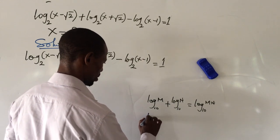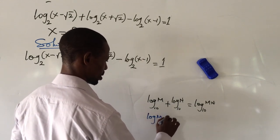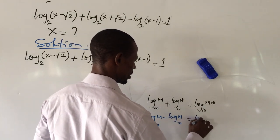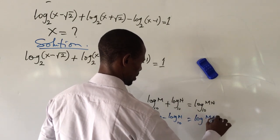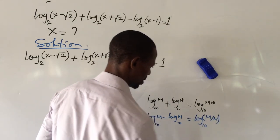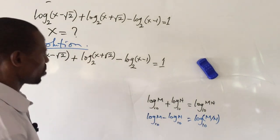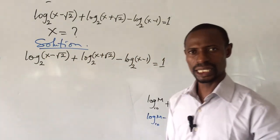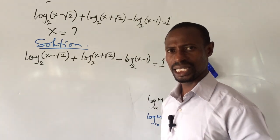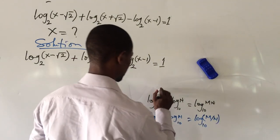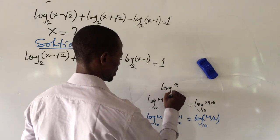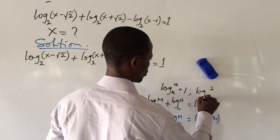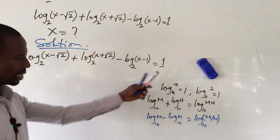The second law is that of division: if you have log M minus log N of the same base, you divide the logs to get log (M divided by N) base 10. The last law we are going to apply is that the log of any number to its own base equals 1 — so log A base A equals 1, or log 2 base 2 equals 1. These are the three major logarithm laws we will use in this challenge.